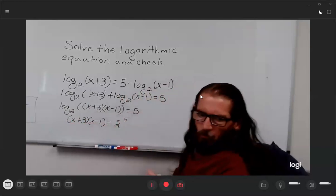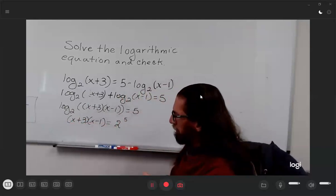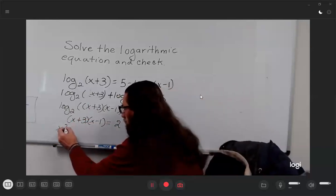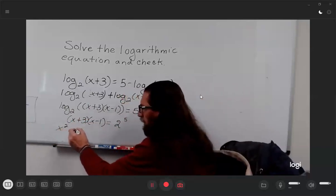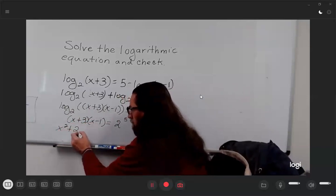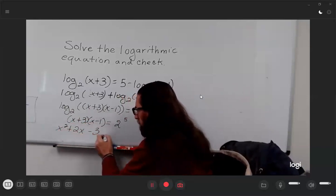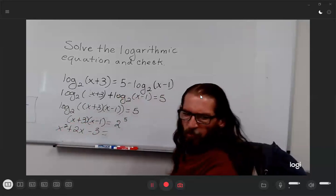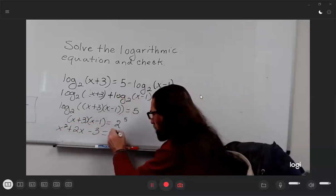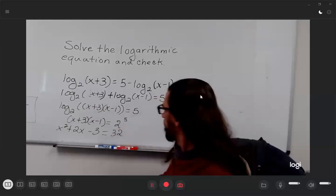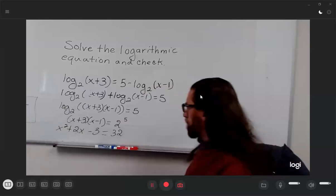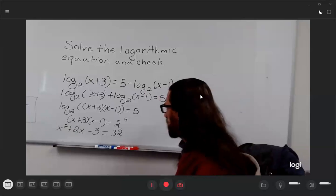So multiplying it out on the left-hand side: x² + 3x - x - 3. And when you combine those two middle terms of 2x, 2 to the fifth is 32. Subtract 32 from both sides.